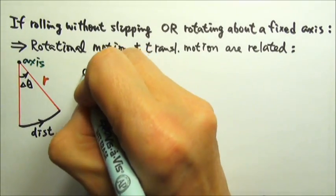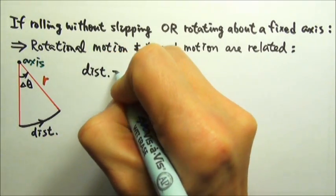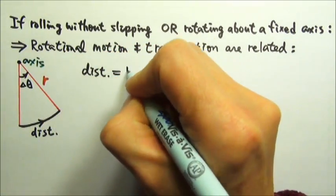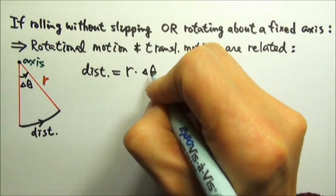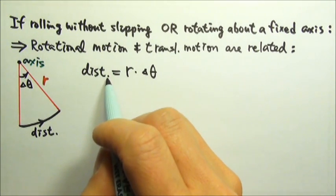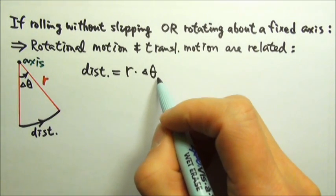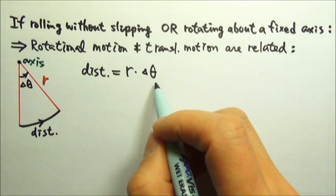So the length of the arc, the distance traveled, equals the radius r times the angle, the angular displacement. This is the translational motion part, and this is the rotational motion part, and they are related in this way.